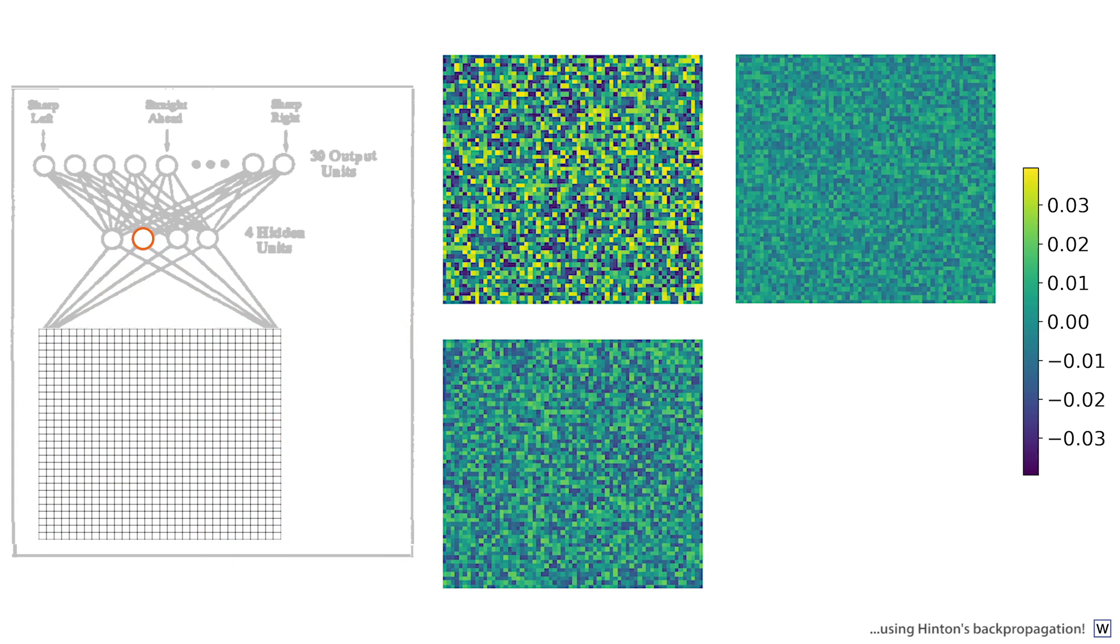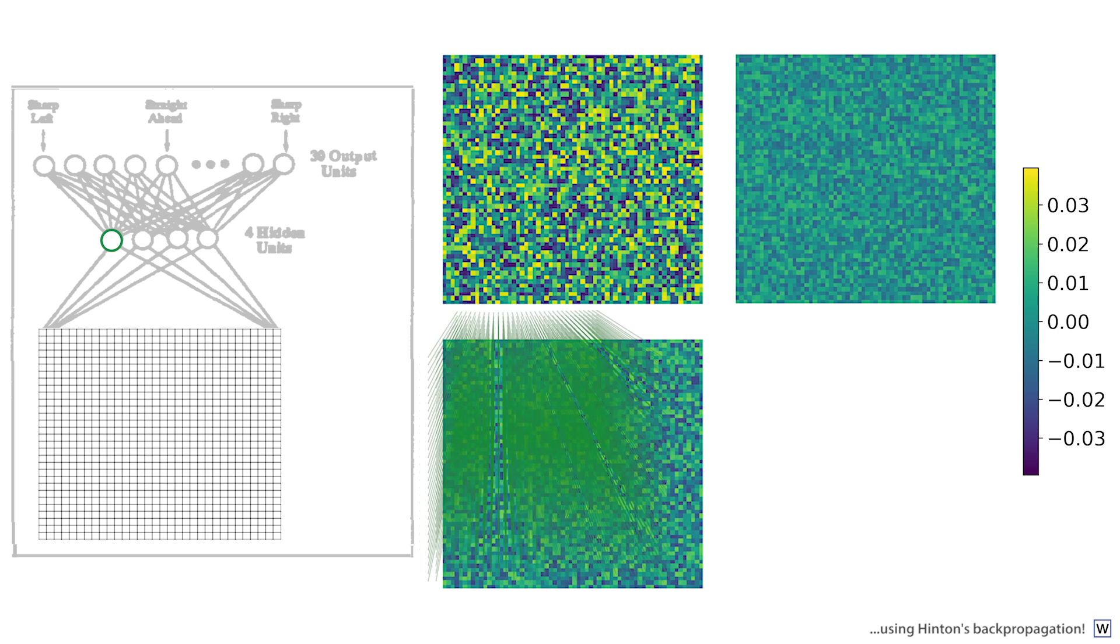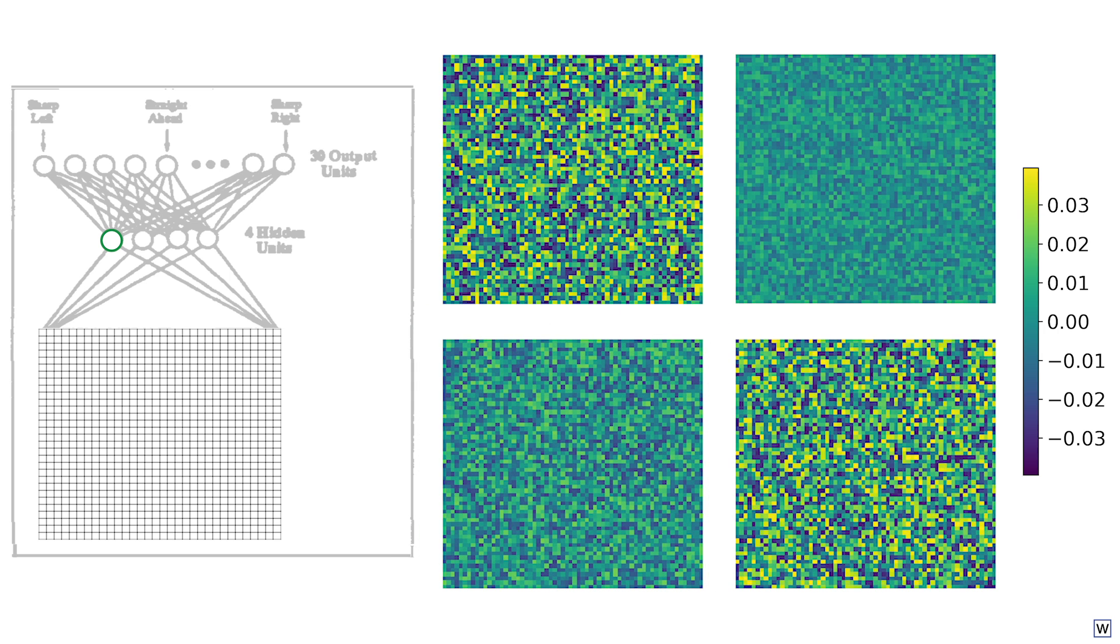Now, when our network learns, it makes incremental adjustments to these weights, in an effort to make its output match our human steering angle. Before training our network, we typically initialize our weights with random numbers. This is why our current weight values just look like random noise. After our images are multiplied by our weights and the results are added together, we're left with four numbers that represent our input image. These four numbers are then mapped to output steering angles by multiplying by another set of trainable weights and adding these results together. We can visualize these weights in the same way we visualized our first layer weights.